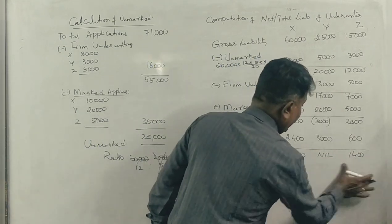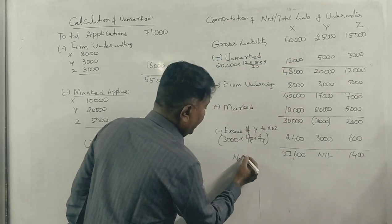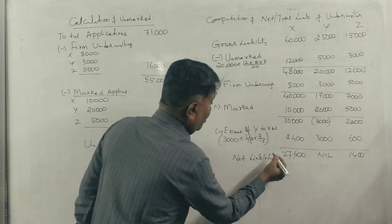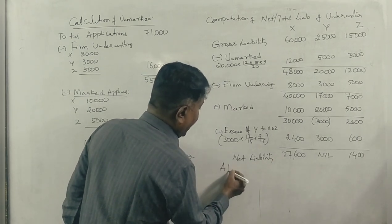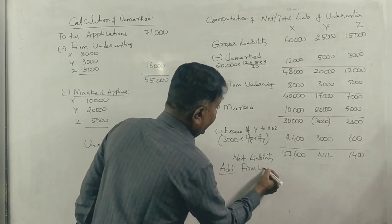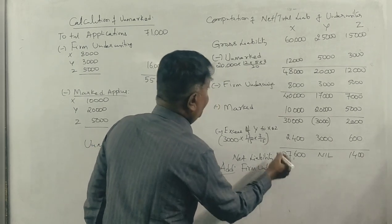Excess of Y is 3,000. This will be distributed to X and Z in the ratio 12 is to 3. 12 by 15, 3 by 15. That gives 2,400 and 600. The net liability is 27,600, 7,400, 7,400. Firm underwriting add.